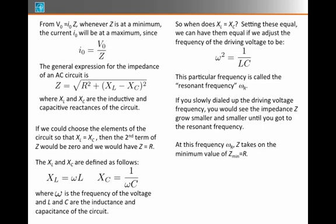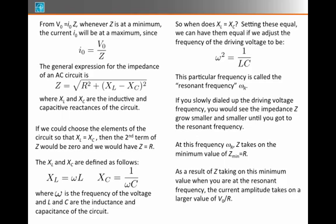At this frequency, omega sub R, Z takes on the smallest possible value, Zmin equals R. And as a result of making Z take on this minimum value, you will make the current amplitude take on a larger value of V0 over R.